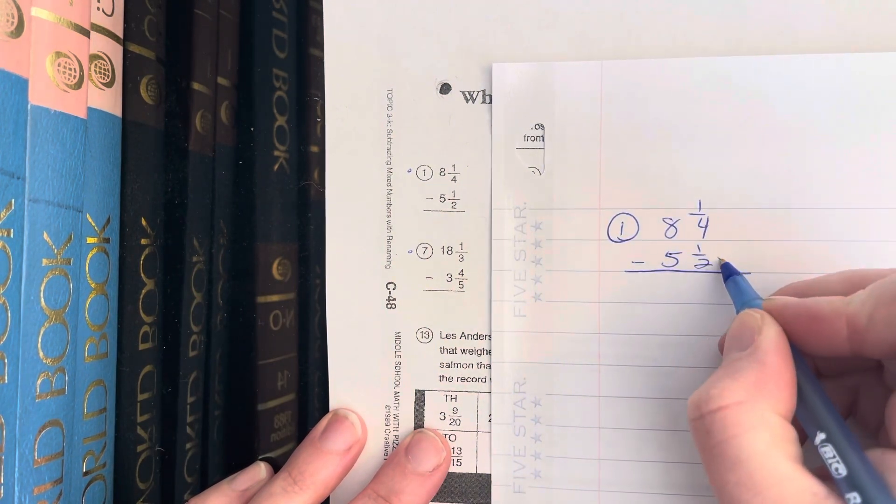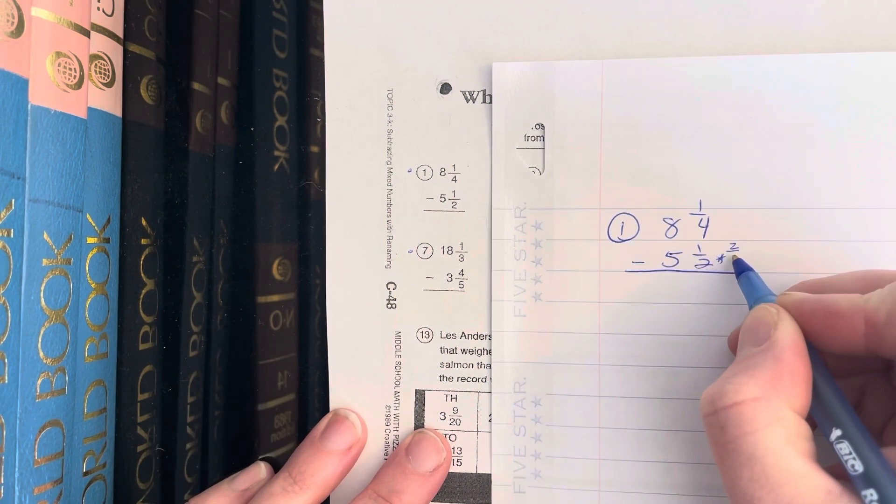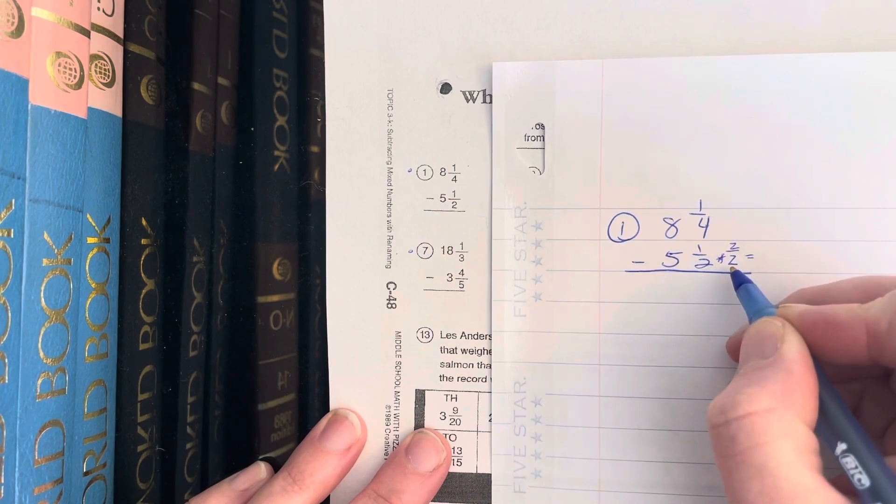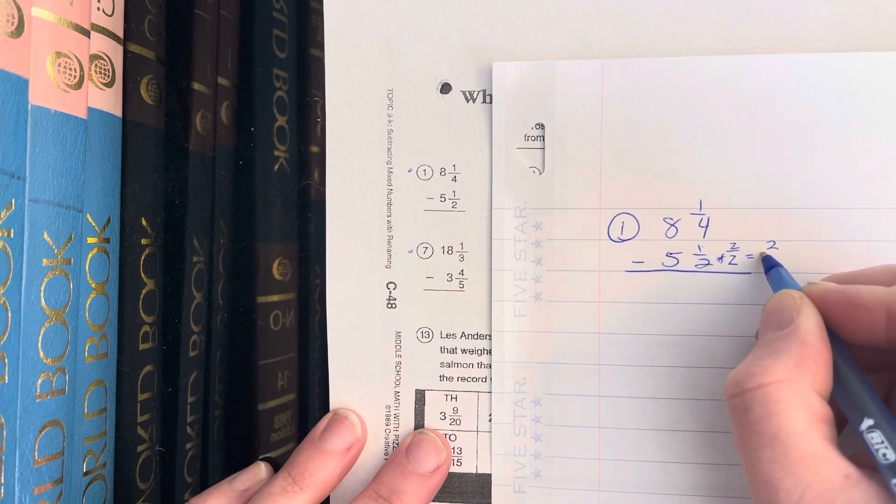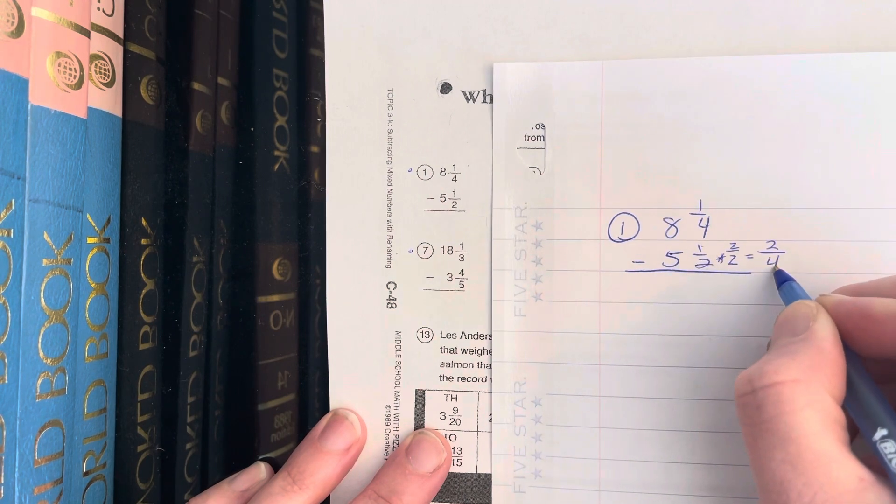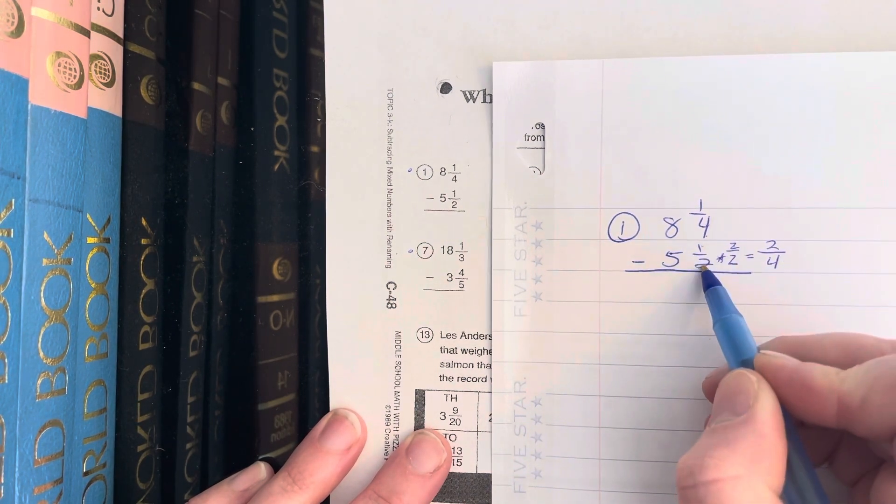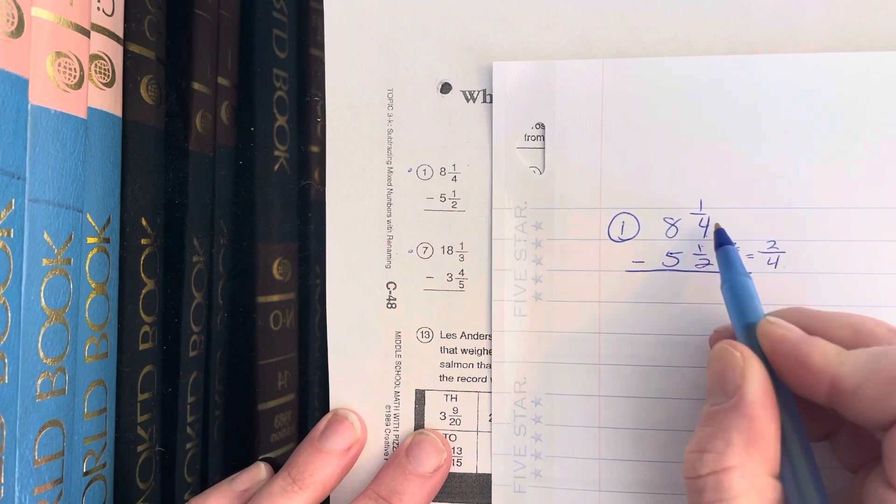So that's where I'm going to start. I like to show my work here; some of you do this mentally. I'm multiplying by 1 to find an equivalent fraction: 1 times 2 is 2, 2 times 2 is 4. Now I don't have to change this one because I can change this denominator into 4. So now I have 1/4 minus 2/4.